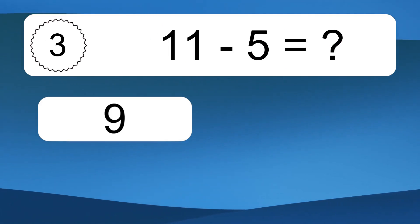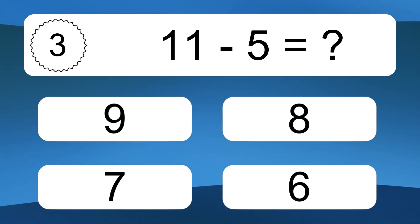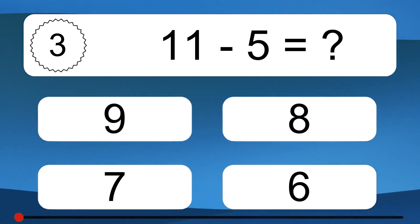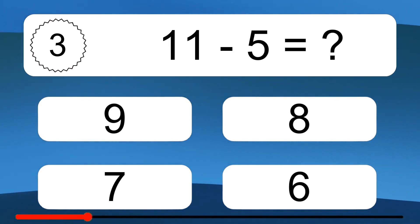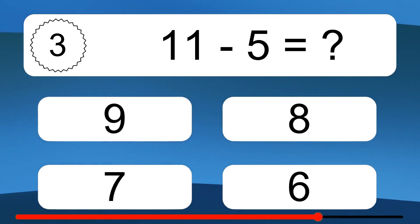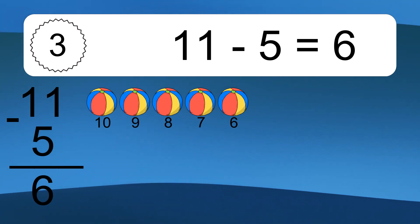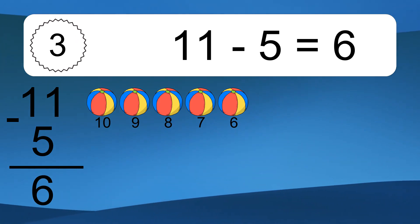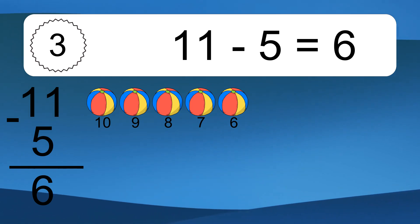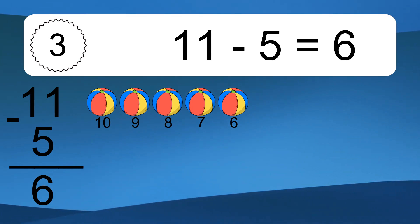11 minus 5 equals what? 11 minus 5 equals 6. Let's count it. 10, 9, 8, 7, 6.